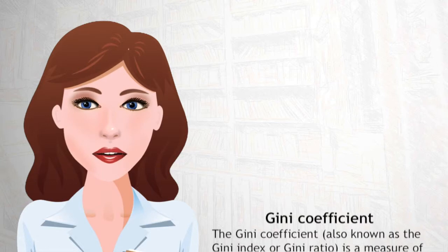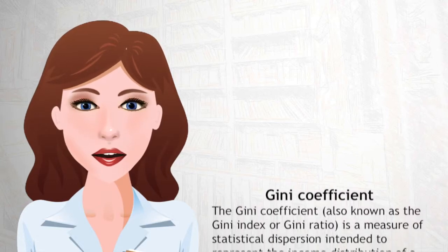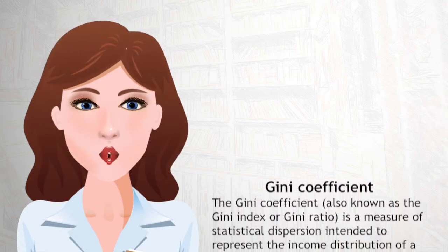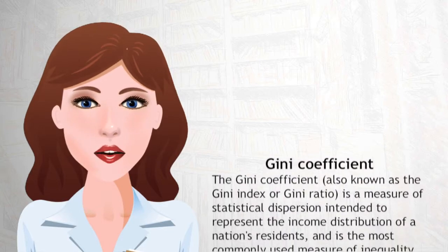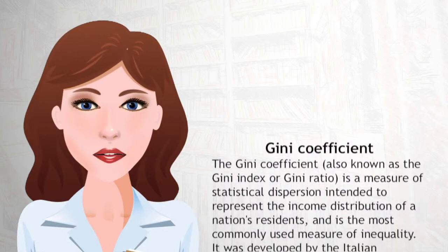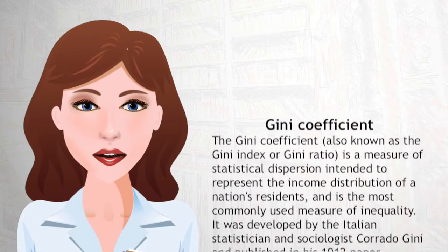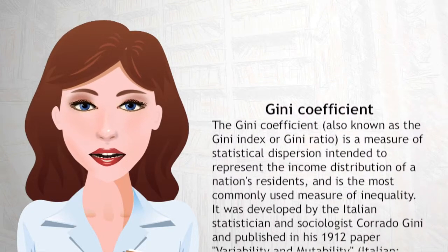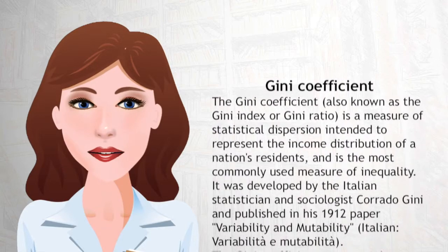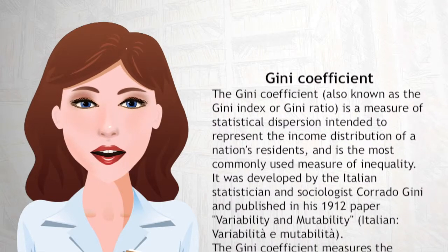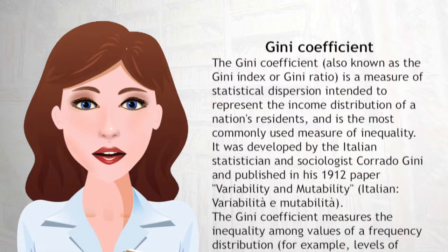The Gini coefficient, also known as the Gini index or Gini ratio, is a measure of statistical dispersion intended to represent the income distribution of a nation's residents, and is the most commonly used measure of inequality. It was developed by the Italian statistician and sociologist Corrado Gini and published in his 1912 paper Variabilità e Mutabilità.